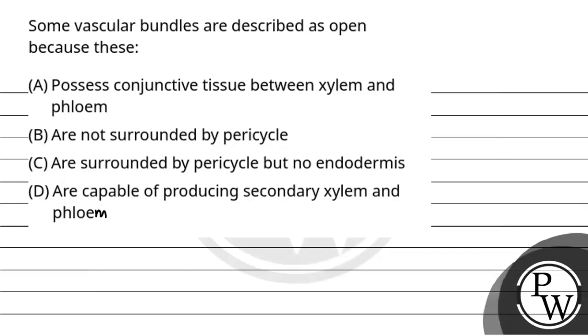Hello Achyong. Let's read the question. Some vascular bundles are described as open because these: (A) Possess conjunctive tissue between xylem and phloem, (B) Are not surrounded by pericycle, (C) Are surrounded by pericycle but no endodermis, and (D) Are capable of producing secondary xylem and phloem.